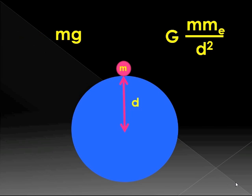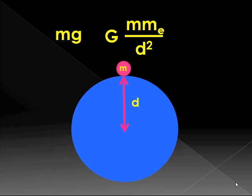Therefore, we can equate these two equations. mg is equal to G m m e over d squared. They both have to give us the same answer.